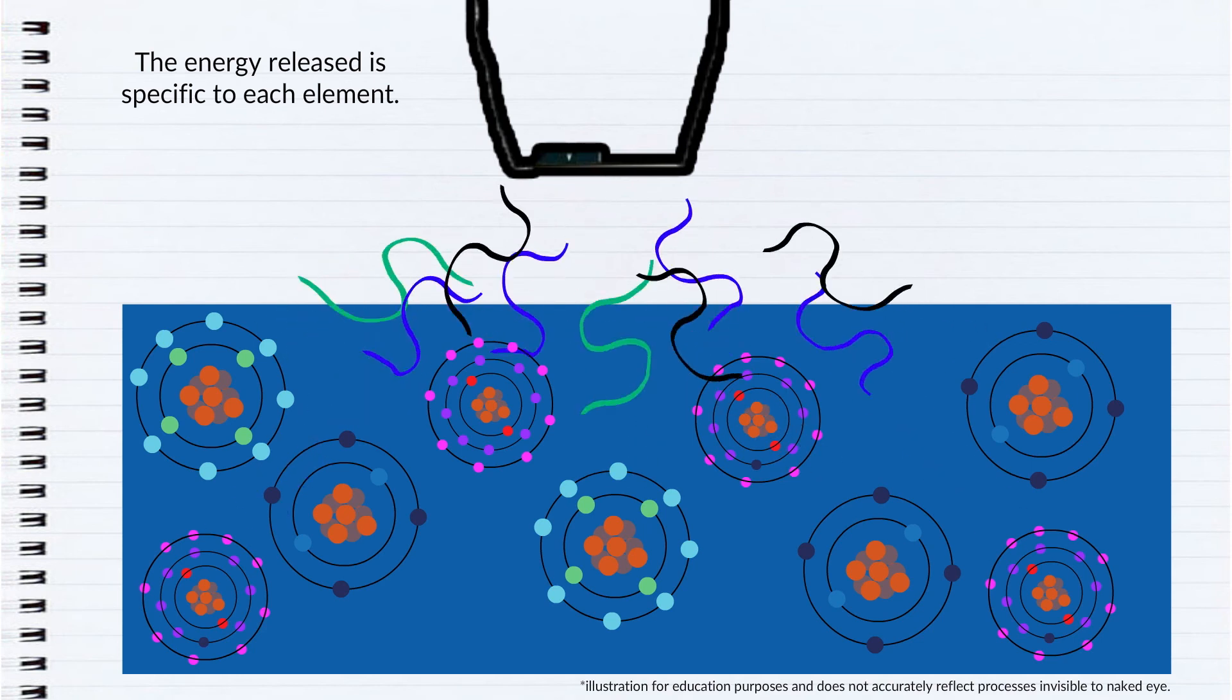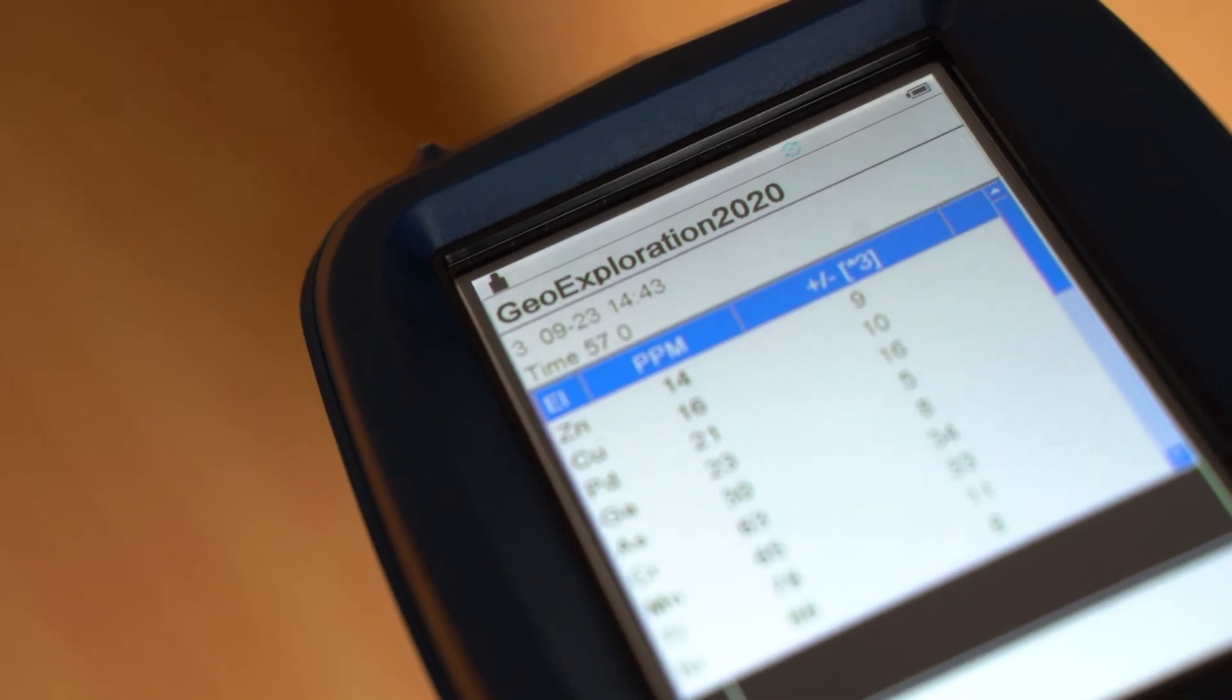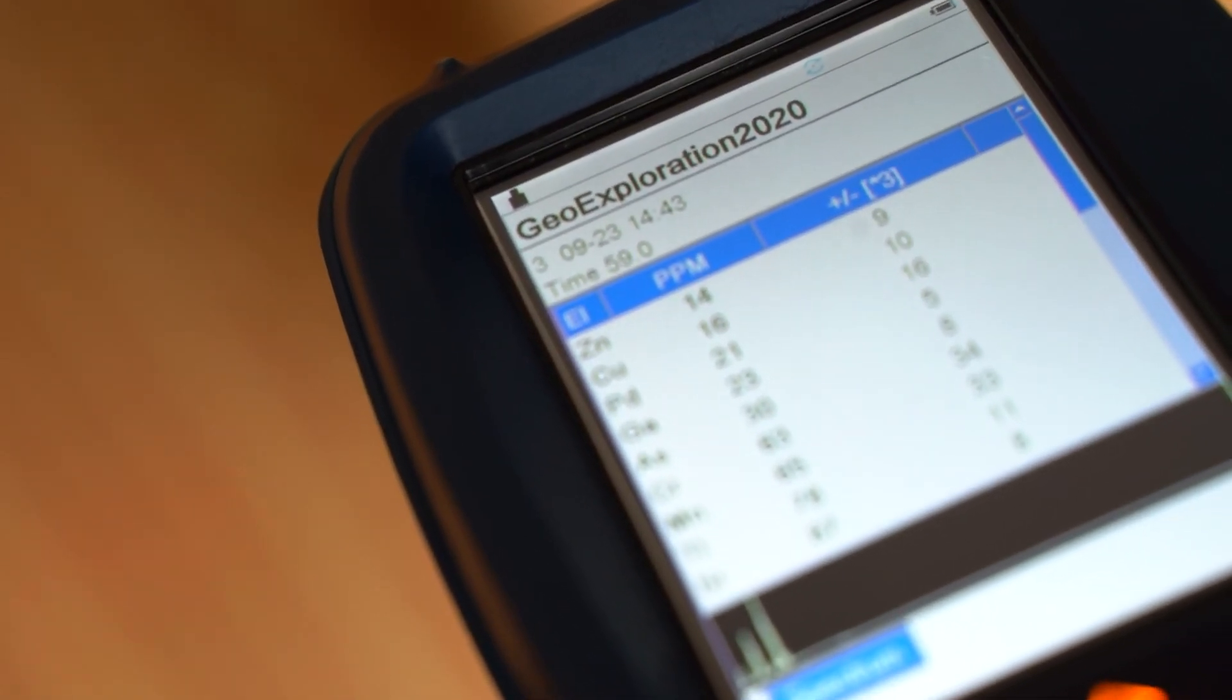The energy of the released photon is specific to each element, which the detector will then measure. This is how the XRF can determine what elements are present within the sample. The on-board instrument calibrations convert this spectrum into semi-quantitative results for the user. So that's the basics behind the XRF.